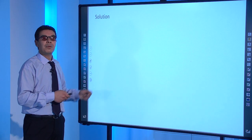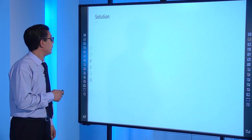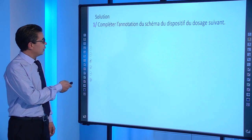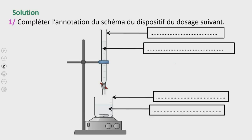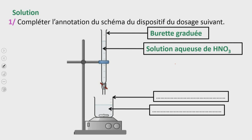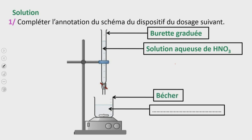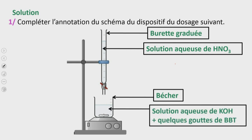Passons à la solution et commençons par répondre à la première question. Voici le dispositif de dosage. La verrerie verticale est appelée burette graduée. Dans cette burette, on va introduire la solution aqueuse de HNO₃, l'acide nitrique. Le récipient en dessous est un bécher dans lequel on va introduire la solution aqueuse de KOH avec quelques gouttes de BBT.